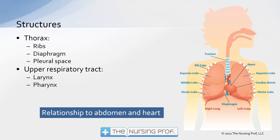Thirdly, we have the pleural space. The pleural space is that small space between the rib cage and the lung, and that contains just a little bit of a negative pressure. The negative pressure, or the vacuum, is designed to suck those lungs open, to hold them open. It's kind of like putting some sticky stuff on your fingers and grabbing the outside of a balloon to pull the balloon open.